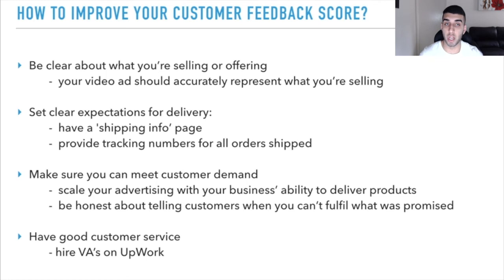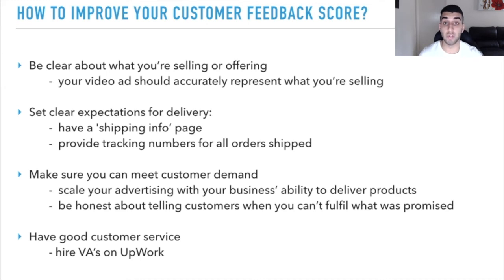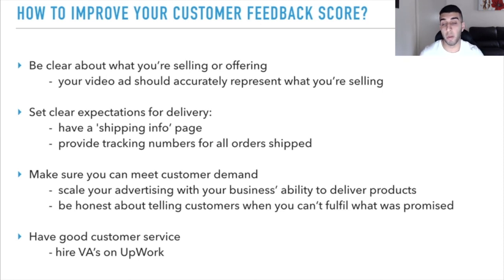The biggest question is how to improve your customer feedback score. Here are four ways. First, be clear about what you're selling — your video ad should accurately represent what you're selling. Second, set clear expectations for delivery: have a shipping info page that clearly shows shipping speeds and provide tracking numbers for all orders shipped. Third, make sure you can meet customer demand — do not scale your business if you don't have the money to fulfill orders. Scale your advertising with the business's ability to deliver products, and be honest with customers when you can't fulfill what's promised.